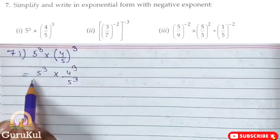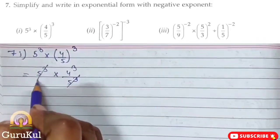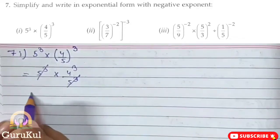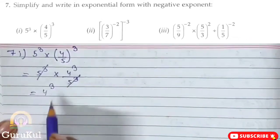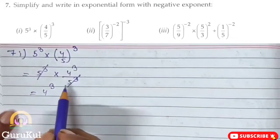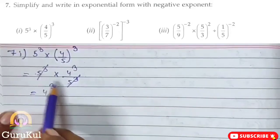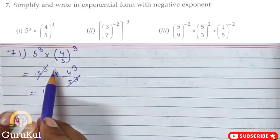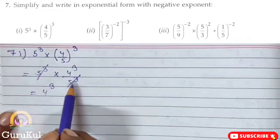This step is very easy — you can do this in two ways. The first way: 5 to the power 3 is cut, giving us 4 to the power 3. The other way is division — the base is common, which is 5, so we subtract the powers: 3 minus 3 is 0.